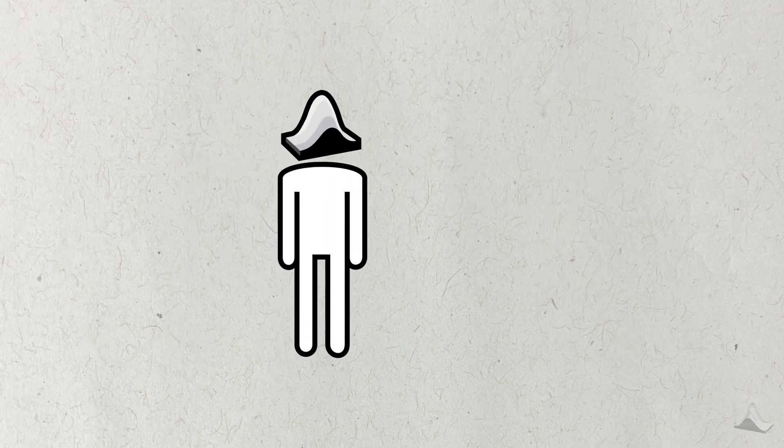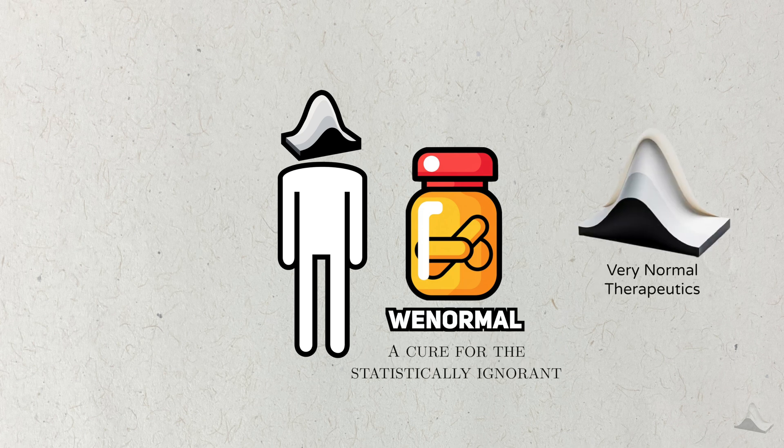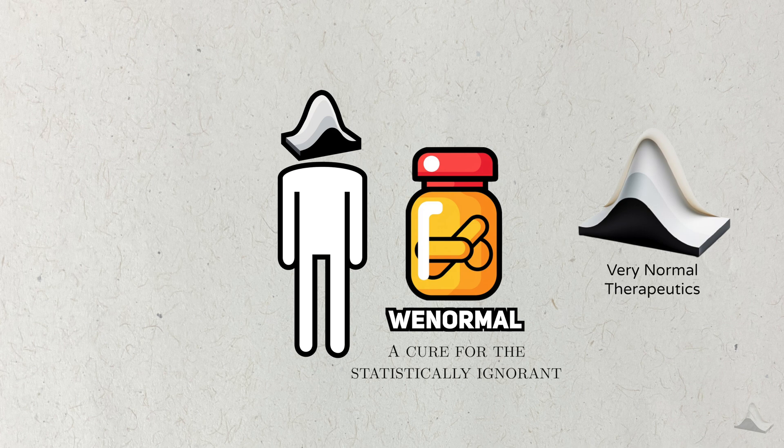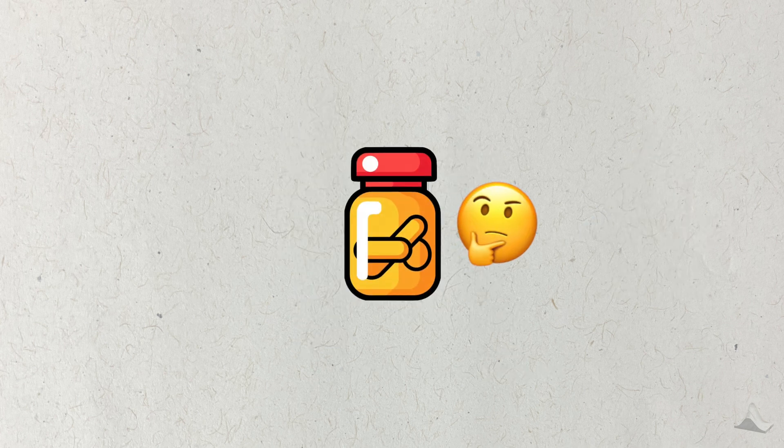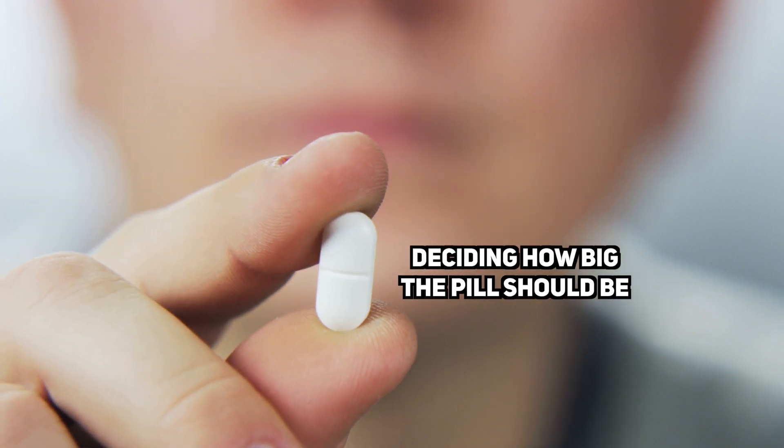To help you through the journey of a drug, we'll use a hypothetical drug as an example. We'll call it WeNormal, a cure for being statistically ignorant. Scientists at very normal pharmaceuticals (not a real company by the way) developed this compound, and we think it could make the world a better place. The first thing we need to figure out for WeNormal is how much to give to people. It's a totally new drug, so I'm not sure what a safe amount is for people to take. Answering these questions is the realm of what's called phase one trials.